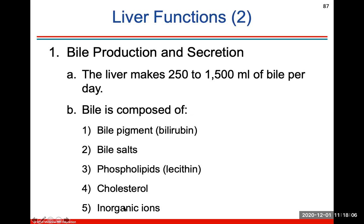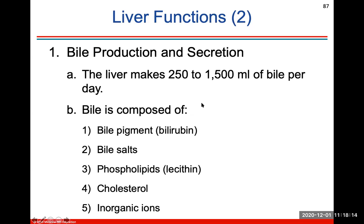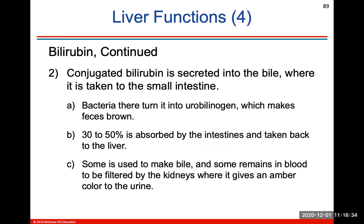Bile is composed of several substances. Bilirubin is produced in the spleen, liver, and bone marrow — it's derived from heme minus the iron from hemoglobin, making it a breakdown product of hemoglobin. Bilirubin is not water soluble. It is secreted into the bile, taken into the small intestine, and absorbed by the intestines back into the liver. What bile does is digest your fats in your small intestine.